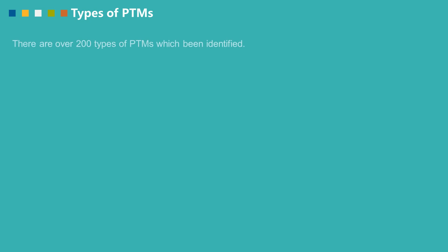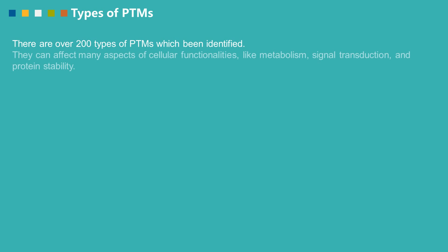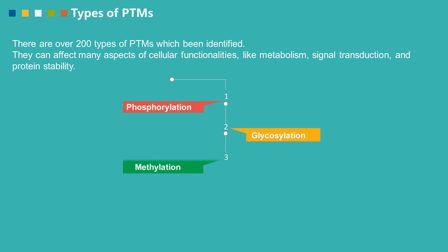There are over 200 types of post-translational modifications which have been identified. They can affect many aspects of cellular functionalities, like metabolism, signal transduction, and protein stability. Next, we will briefly introduce some common post-translational modifications, including phosphorylation, glycosylation, methylation, acetylation, and ubiquitination.